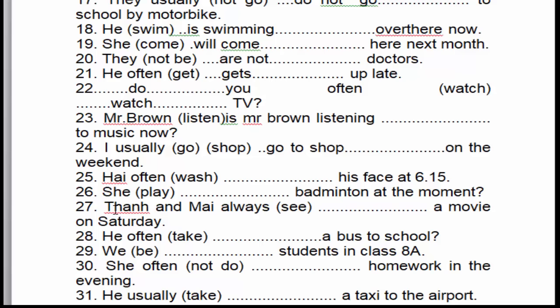Câu số 25: 'He often watches TV at 6:50.' Anh ấy thường xem tivi khoảng lúc 6 giờ 15. 'Often' là dấu hiệu nhận biết của thì hiện tại đơn. 'He' là chủ ngữ số ít, cho nên động từ 'watch' chúng ta thêm 'es', trong trường hợp này thêm 'yes' → 'watches'.